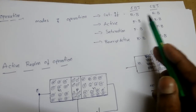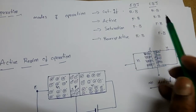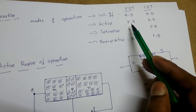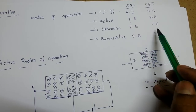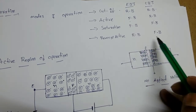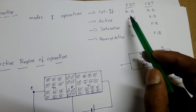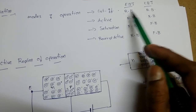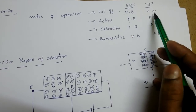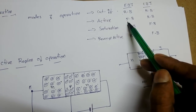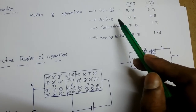There are two junctions — emitter-base and collector-base — giving four possible bias combinations. If both junctions are reverse biased, it is cut-off mode, meaning no current flows. If the emitter-base junction is forward biased and the collector-base junction is reverse biased, the transistor is in active mode.